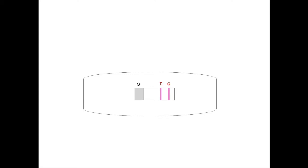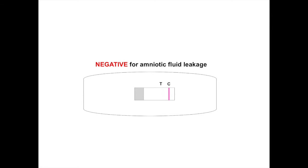Distinct purple bars appear within 5 minutes. If both control and test bars appear, the result is interpreted as positive for amniotic fluid leakage. If only the control bar is visible, the result is interpreted as negative for amniotic fluid leakage, and the leaking fluid might be urine or semen.